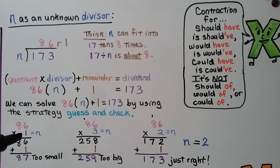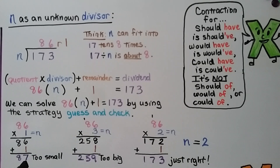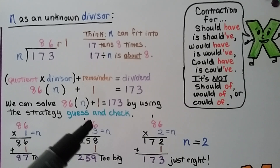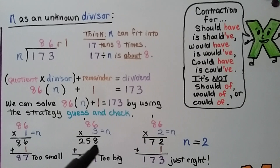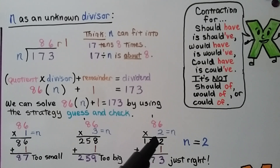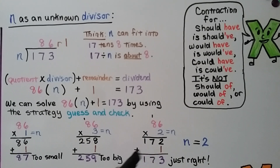So we try n equals 2. 86 times 2 is 172, plus the 1 remainder is 173 — just right. That means n equals 2. Our divisor must be 2.